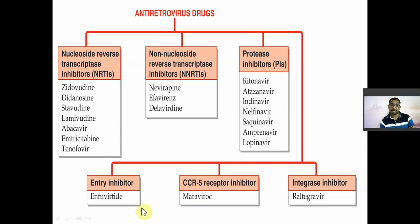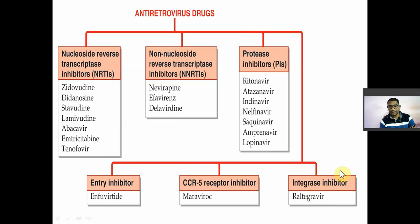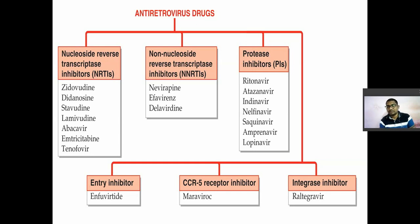Entry inhibitors include Enfuvirtide (T-20). CCR5 receptor inhibitors, also known as chemokine receptor 5 inhibitors, include Maraviroc. Both entry inhibitors and CCR5 inhibitors prevent the entry of virus into the cell, but by different mechanisms. Integrase inhibitors — the integrase enzyme is responsible for integration of viral DNA/RNA with the host DNA. Raltegravir is the integrase inhibitor, which prevents the viral genetic material from mixing with host DNA.